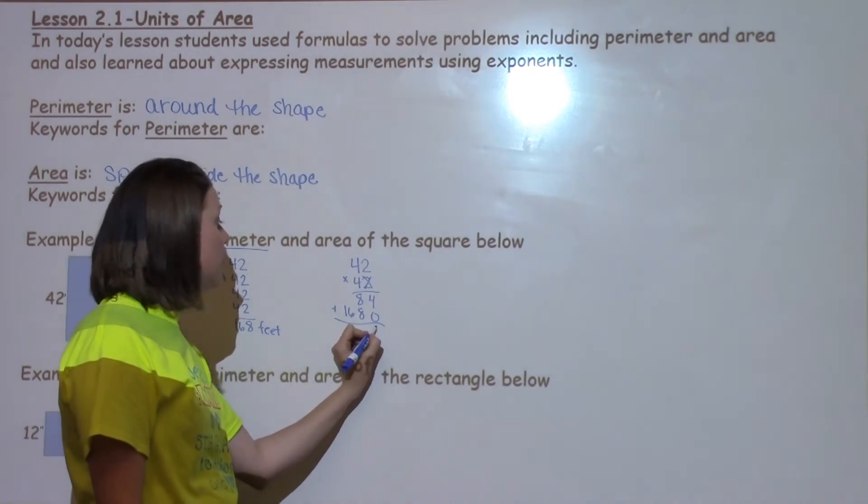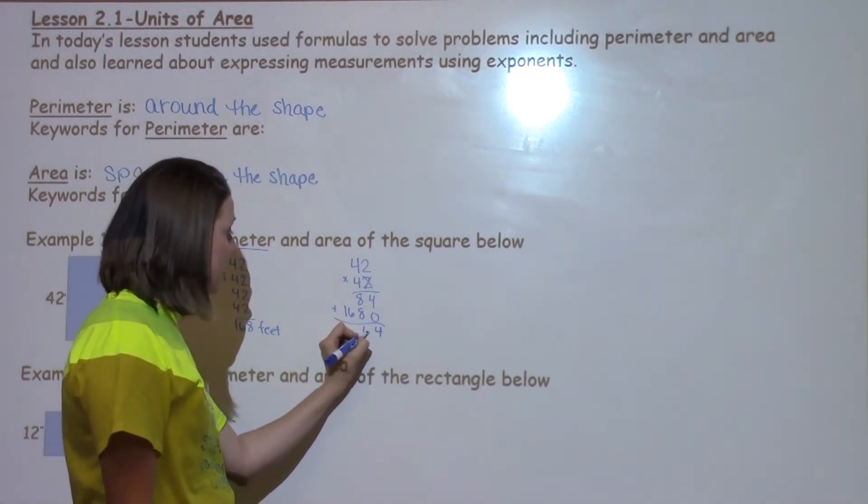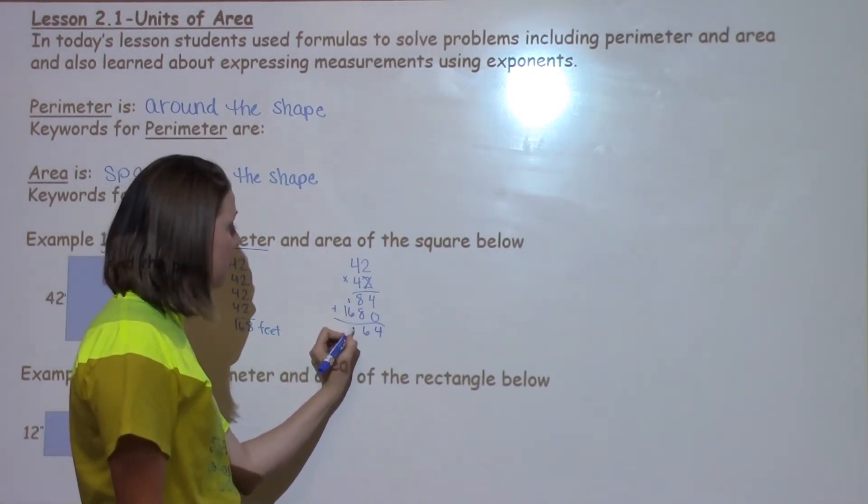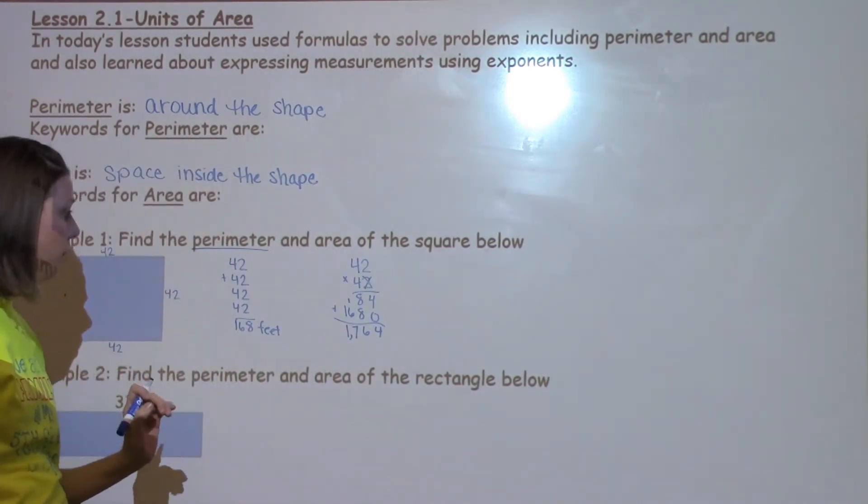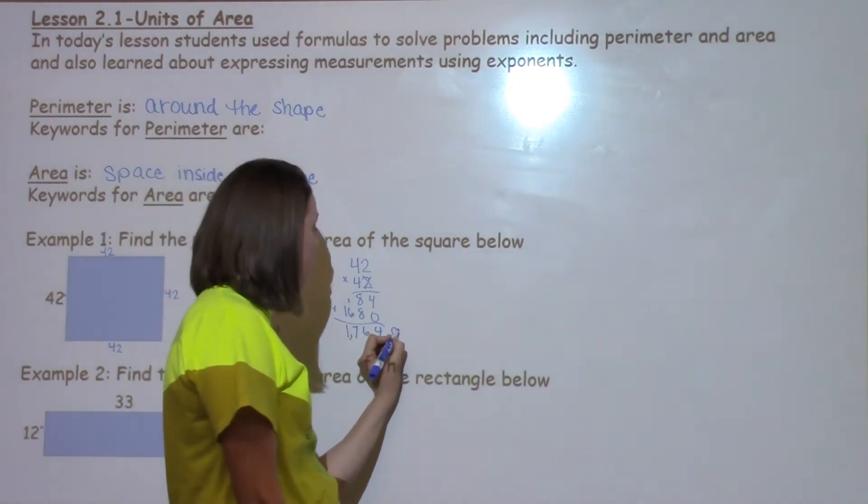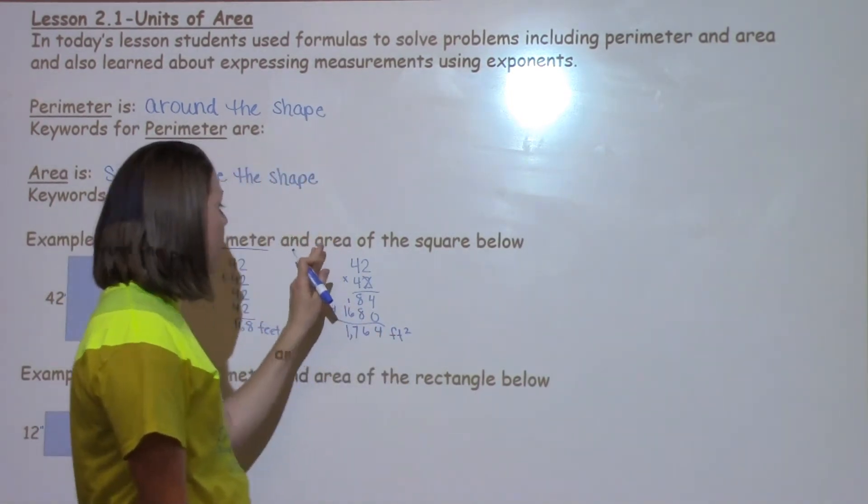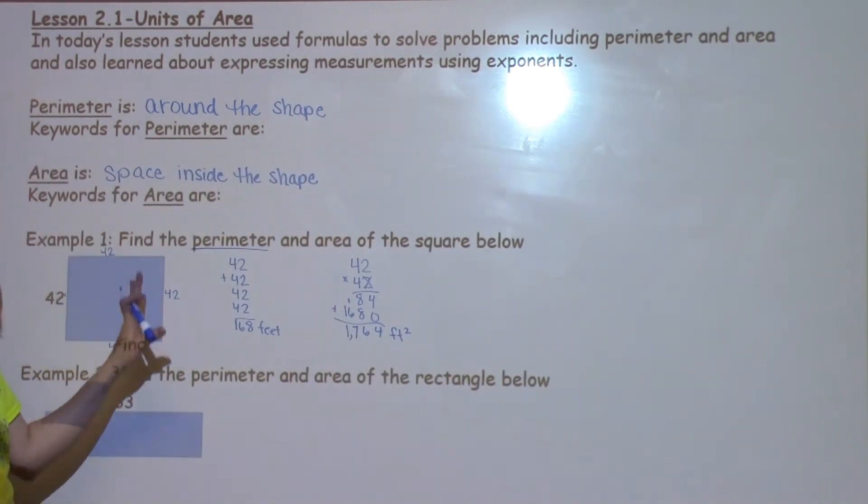When I add these two together, I have 4 plus 0, which is 0. So 8 plus 8 is 16, carry my 1. 6 plus 1 is 7, and then I bring down my 1. I've got 1764, and I'm going to have feet squared. Notice when I have area, I always have feet squared because I'm going to cover the inside.